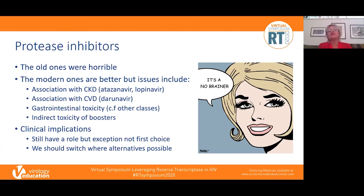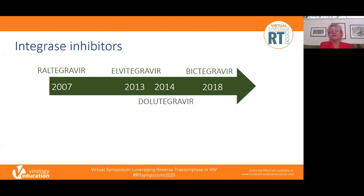Protease inhibitors — one slide, one message: the old ones were horrible, the modern ones are better. But issues include associations with chronic kidney disease, cardiovascular disease, and gastrointestinal toxicity. The newer PIs are still worse compared to other classes, and there is indirect toxicity from boosters and drug-drug interactions. PIs still have a role but are an exception rather than first choice, and we should switch to non-boosted options where reasonable alternatives exist.